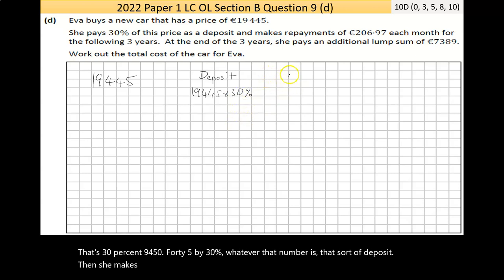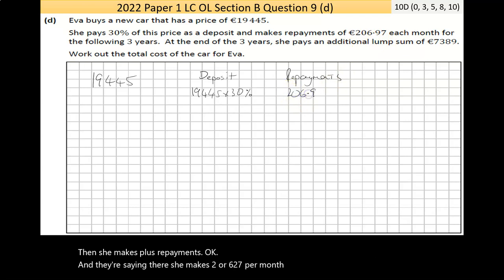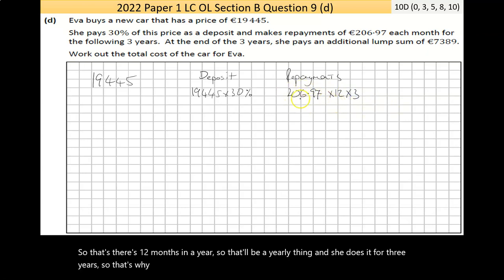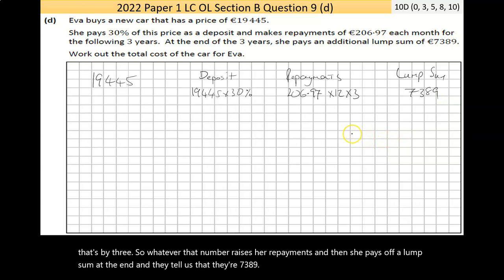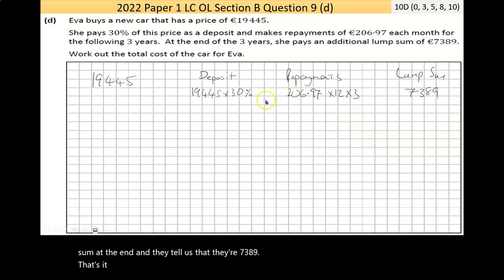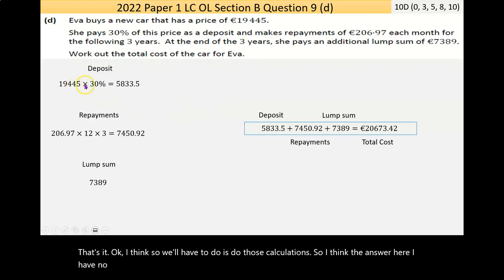Then she makes plus repayments. They're saying there, she makes €206.97 per month. There's 12 months in a year. So that'll be a yearly thing. And she does it for three years. So that's by three. So whatever that number is, is her repayments. Then she pays off a lump sum at the end. And they tell us that, that's €7,389.